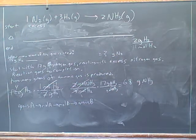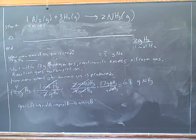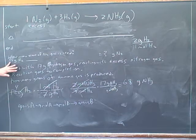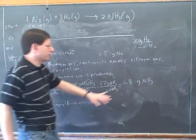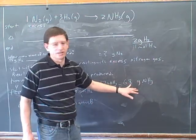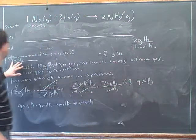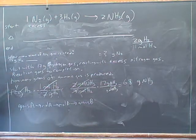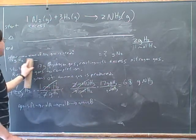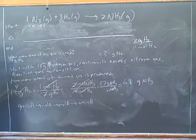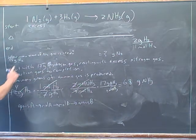We should actually physically write down the target units. The next step is to write down your starting information. What are we using as our starting information? 12 grams of H2. We could have used 68 grams of ammonia, but we rejected that because it's a more complicated number. Notice that the starting information is not a fraction — it's just a number.